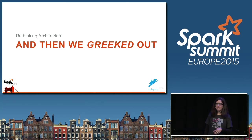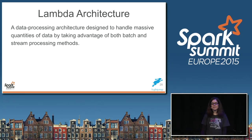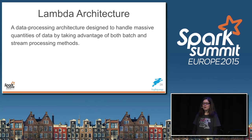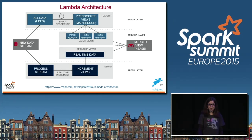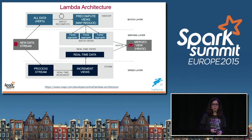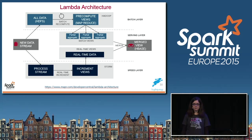After all of that, we ended up with Lambda architecture. We're all familiar with it now — a data processing architecture designed to handle massive quantities of data by taking advantage of both batch and stream processing methods. This was coined by Nathan Marz. It was a huge stride forward and a lot of businesses are using this architecture. This clean representation shows it well — if you Google for images it can look much more complicated and scary.